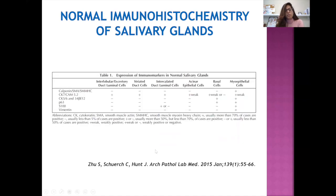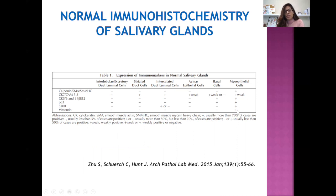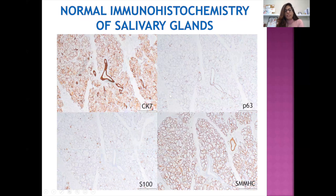This table is extremely important in understanding immunohistochemistry in salivary gland neoplasms. All ductal and epithelial luminal cells, as well as acinar epithelial cells, are positive for CK7 and CAM5.2, though basal and myoepithelial cells are also weakly positive for these markers. Basal cells are specifically highlighted by CK5/6, 34βE12, and P63, which can also be positive in myoepithelial cells. Myoepithelial cells are specifically highlighted by myoid markers such as calponin, SMA, SMMHC, as well as S100 and vimentin.